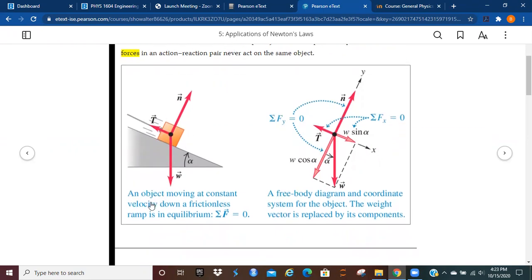Here we have an object moving at constant velocity down a frictionless ramp, and it is in equilibrium. If you abstract it to a free body diagram and look at the coordinates for each of the objects, the weight vector is replaced by its components.